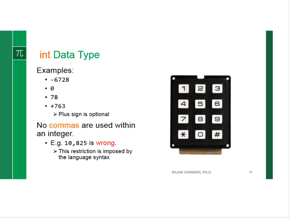The integral data types are used to handle the representation of whole numbers: zero, seventy-eight, plus seven sixty-three, and the plus sign is optional. Notice no commas are used within an integer. For example, ten thousand eight hundred and twenty-five. This is okay for a bank, but not for a programming language. Such a restriction is imposed by the language syntax.